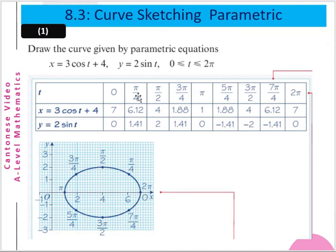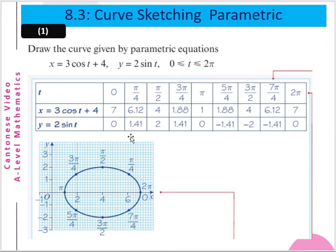Draw the curve given by the parametric equation x equal to 3cos(t) plus 4, and y equal to 2sin(t), when t is from 0 to 2π. You draw a table and put the values of t from 0, π/4, π/2, 3π/4, π, up to 2π. Substituting into x = 3cos(t) + 4, you get x values of 7, 6.12, 4, 1.88, 1, 1.88, 4, 6.12, and 7. The values of x are never less than 0 over this range.